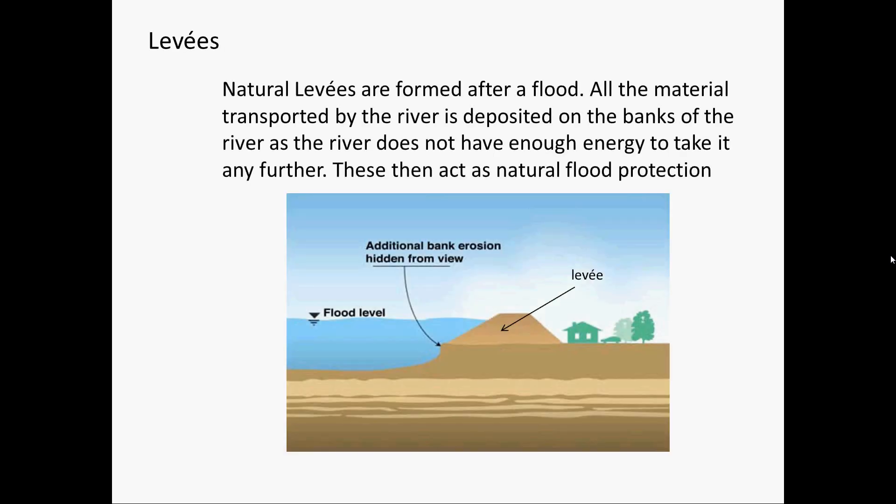Natural levees are formed after a flood, where the material transported by the river is deposited on the banks of the river, as the river does not have enough energy to take it any further. These then act as natural flood protection.